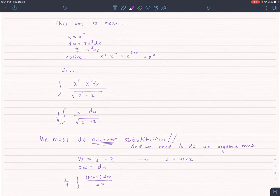And because I have this extra u in the numerator, I have to take that w equals u minus 2 and solve it for u. Once I do that, I get 1/4th the integral w plus 2dw divided by w to the 1 1/2 power.